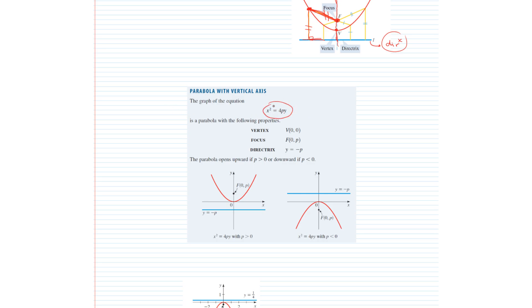The point on the parabola which is closest to its focus is the vertex, and the line perpendicular to the directrix passing through the focus is the axis. This axis also divides the parabola into two equal parts. A parabola with a vertical axis is very popular because it's a quadratic expression in x. An equation of the form x² = 4py can be represented by parabolas along the y-axis.